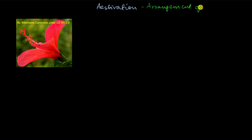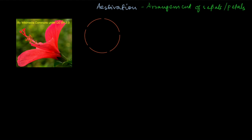Now we are going to look at how petals and sepals are arranged with respect to each other in a flower, and the term for that is aestivation. Aestivation is nothing but the arrangement of sepals and petals. If you look at the sepals side by side one after another — this is the arrangement of the sepals of the hibiscus flower, where each sepal is side by side. This simplest arrangement is called valvate aestivation.